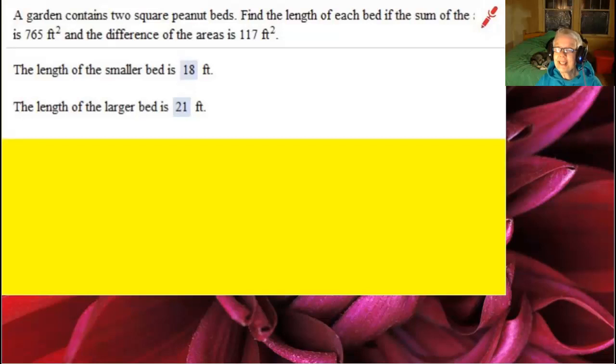Hi there. A garden contains two square peanut beds. Find the length of each bed if the sum of the areas is 765 square feet and the difference of the areas is 117 square feet.